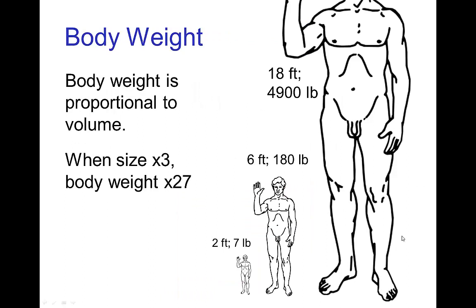Let's start with something as simple as body weight. Body weight is proportional to volume, so as we change the size by a factor of three, the body weight changes by a factor of twenty-seven. If we have a six-foot character that weighs 180 pounds, the exact same character made three times smaller will have twenty-seven times less weight — only about seven pounds, similar to the size of a cat. On the other hand, making the character three times taller increases the weight by a factor of twenty-seven, to over two tons.